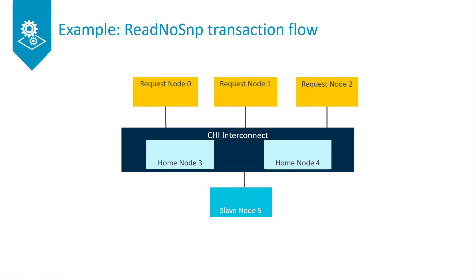In this example we will go through the sequence of messages needed to complete a read no snoop transaction. Request node 0 will issue the read no snoop request and slave node 5 will provide the read data.